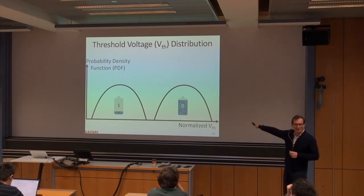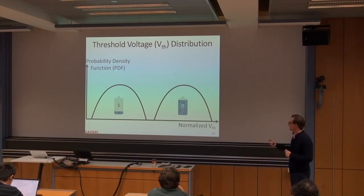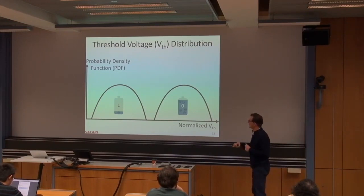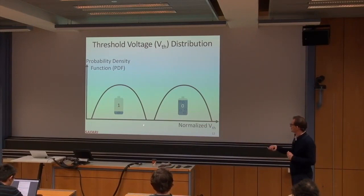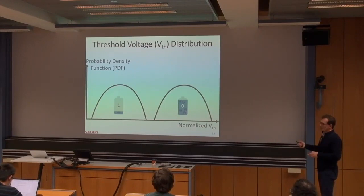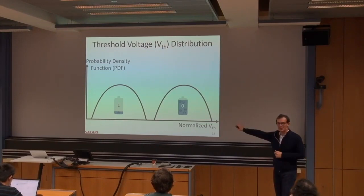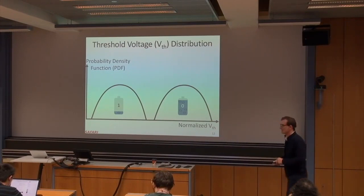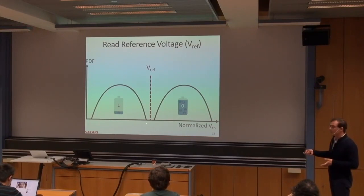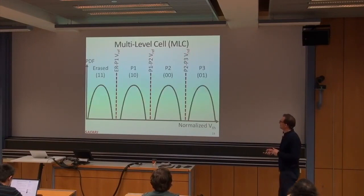This also exists in DRAM cells — they store different amounts of charge — but in flash we have more precise control and can measure the reference voltages we programmed cells into. These threshold voltage distributions are shown as probability density functions on a normalized threshold voltage axis. You select your read reference voltage to delineate the two distributions with no overlap. If distributions overlap, you get errors.